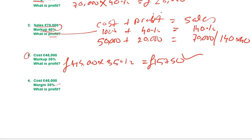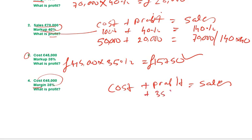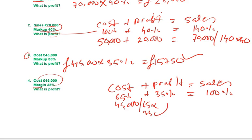It becomes more complicated if they give you margin and cost, because you cannot apply margin percentage directly on cost. Follow the conversion formula: cost plus profit equals sales. If margin profit is thirty-five percent, sales is one hundred percent, so cost is sixty-five percent. The figure given is forty-five thousand, so: forty-five thousand divided by sixty-five, times by thirty-five.